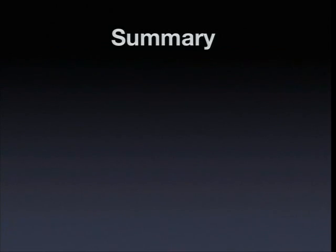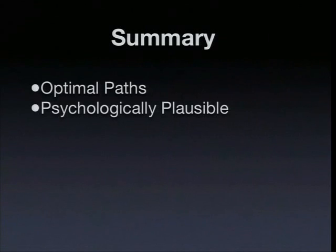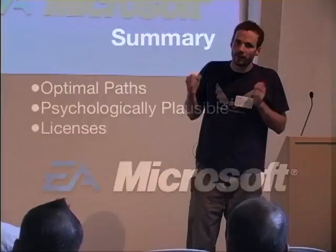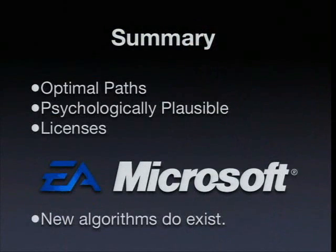In summary, I've described a crowd simulation based on fluid-like principles in which everyone moves according to optimal paths given a psychologically plausible objective function for human motion. This work has actually been licensed to Electronic Arts and Microsoft for use in next-generation video games. Most importantly, new algorithms do exist — new ways of approaching these problems which allow major computational gains over traditional approaches to these dynamical systems.